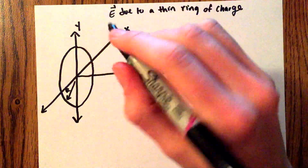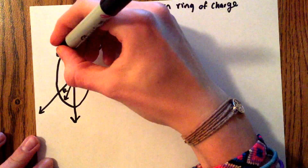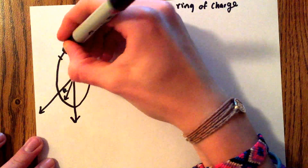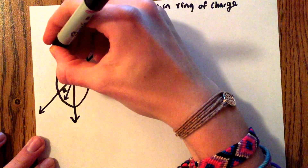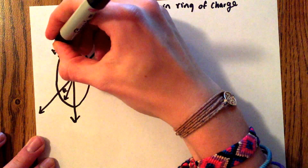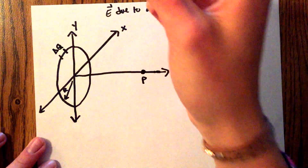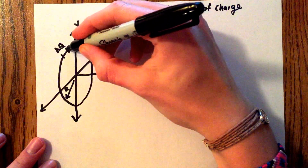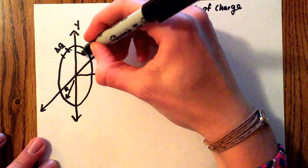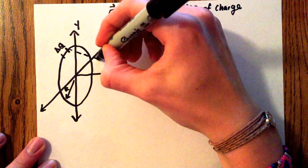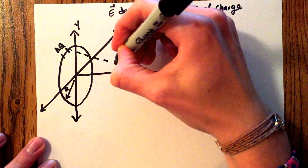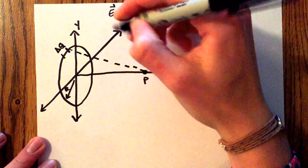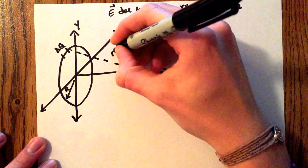To start off, we'll break the ring up into a little tiny part right here and we'll say that it has a charge delta q. We'll draw a line from delta q to the point P and we'll call this line r_i.